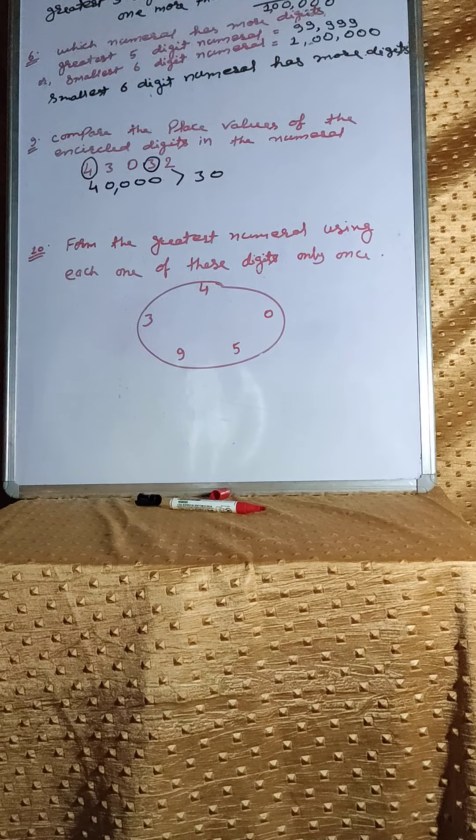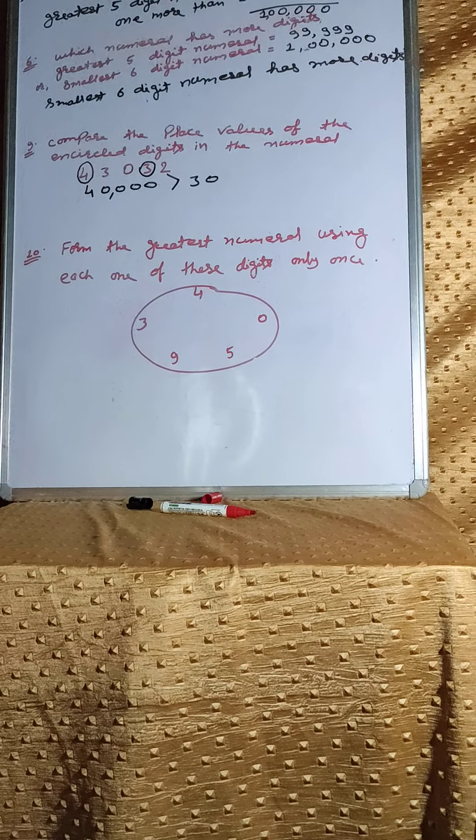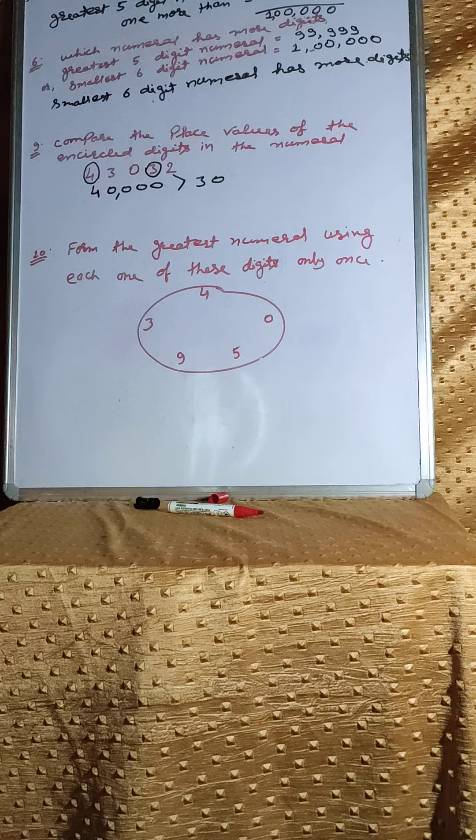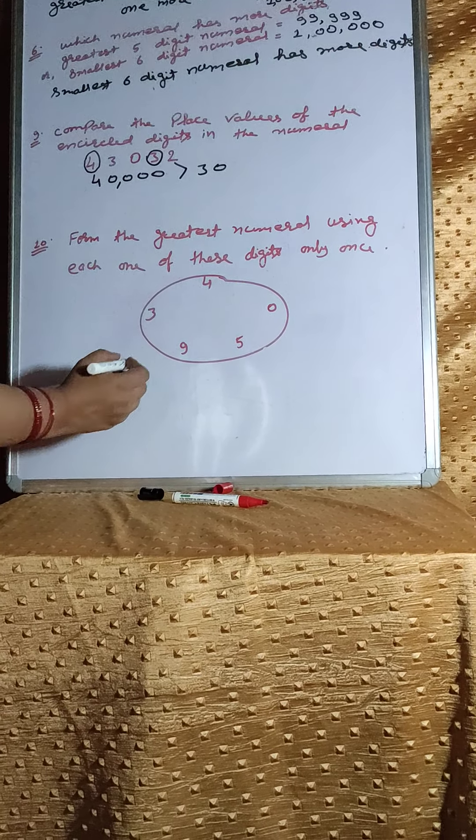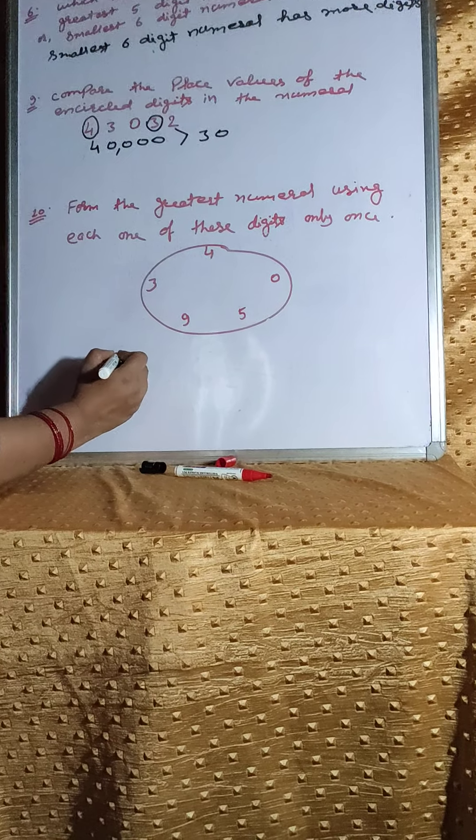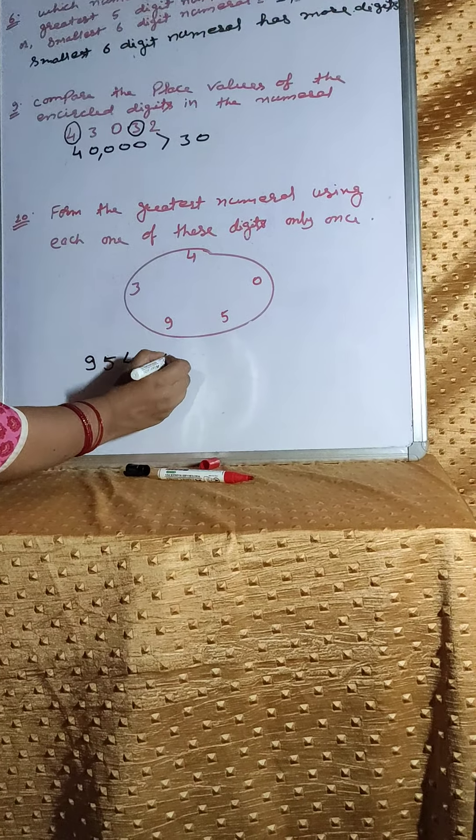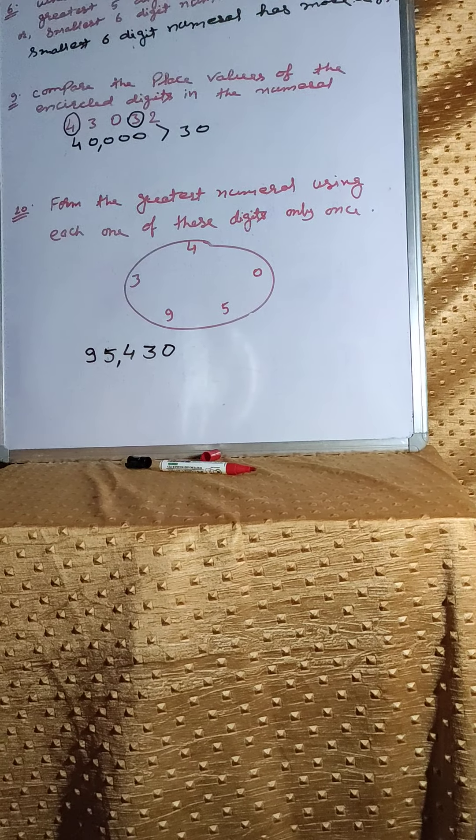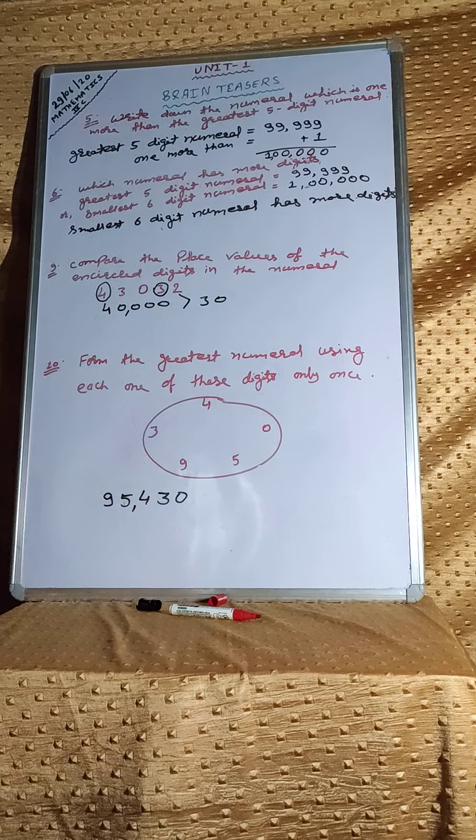Question number 10. Form the greatest numeral using each one of these digits only once. We have to find out the greatest numeral and we should not repeat any digit. So, at first, we will write here 9, 5, 4, 3, 0. That will be 95,430. That's all for unit 1.